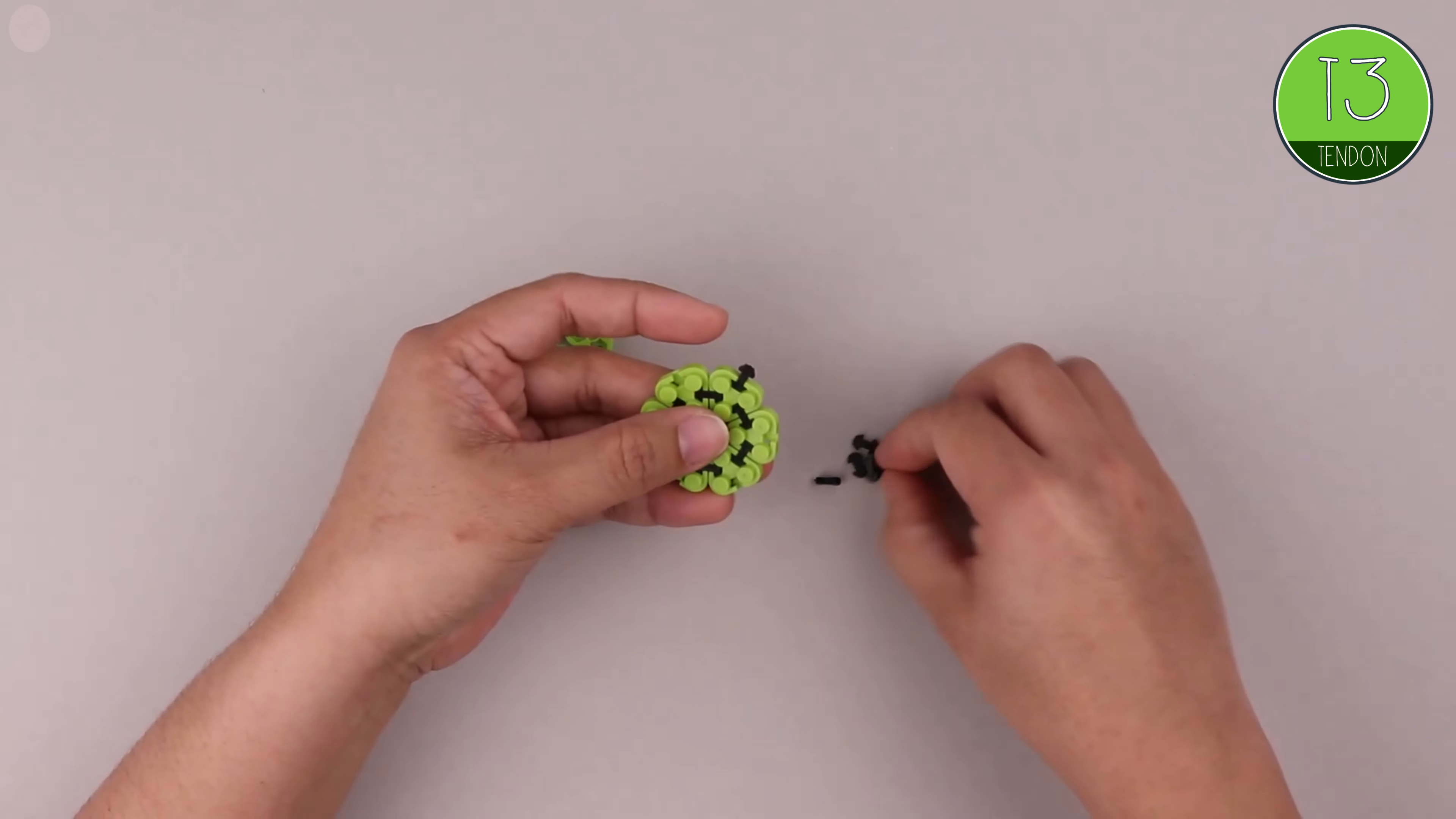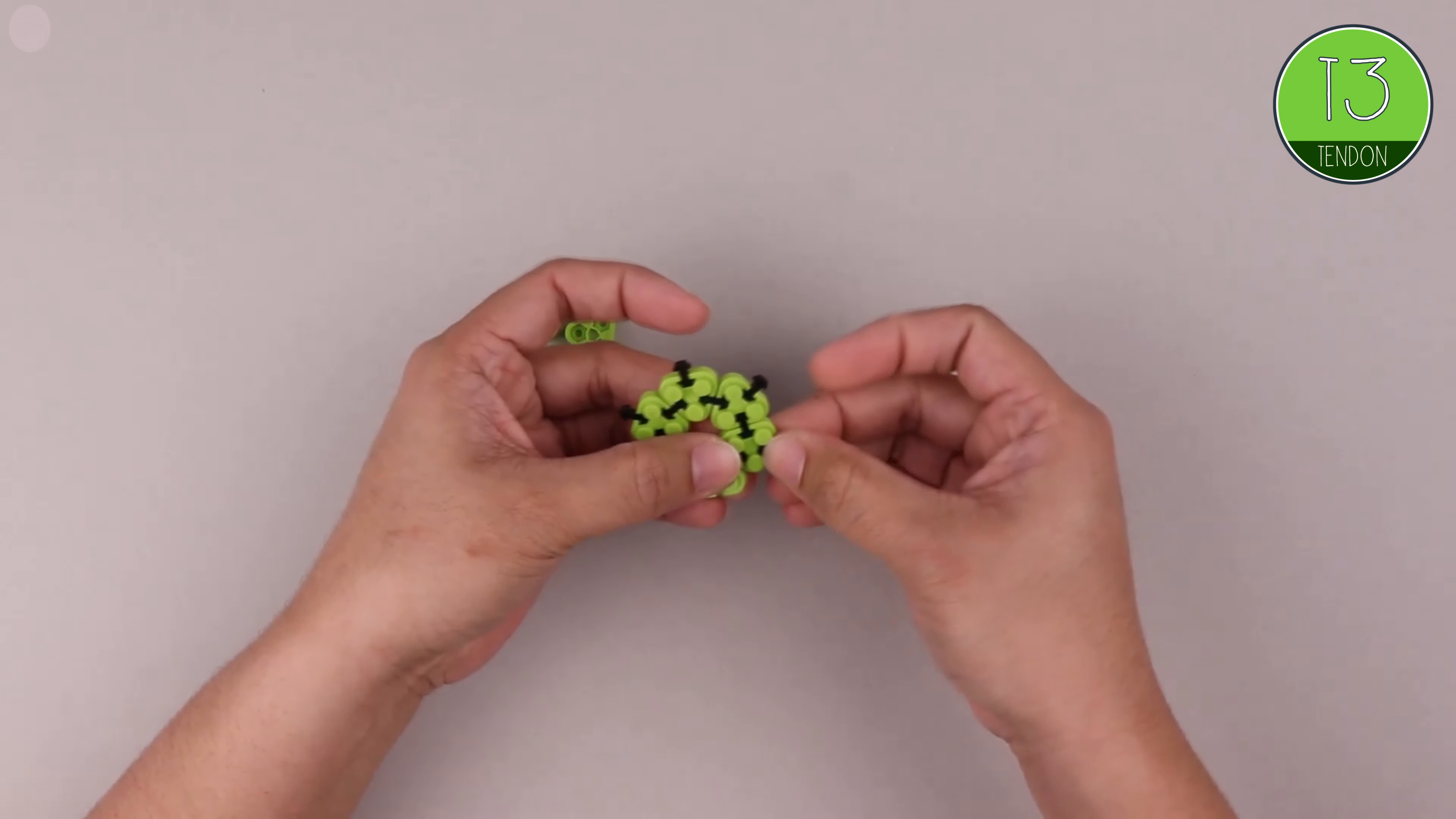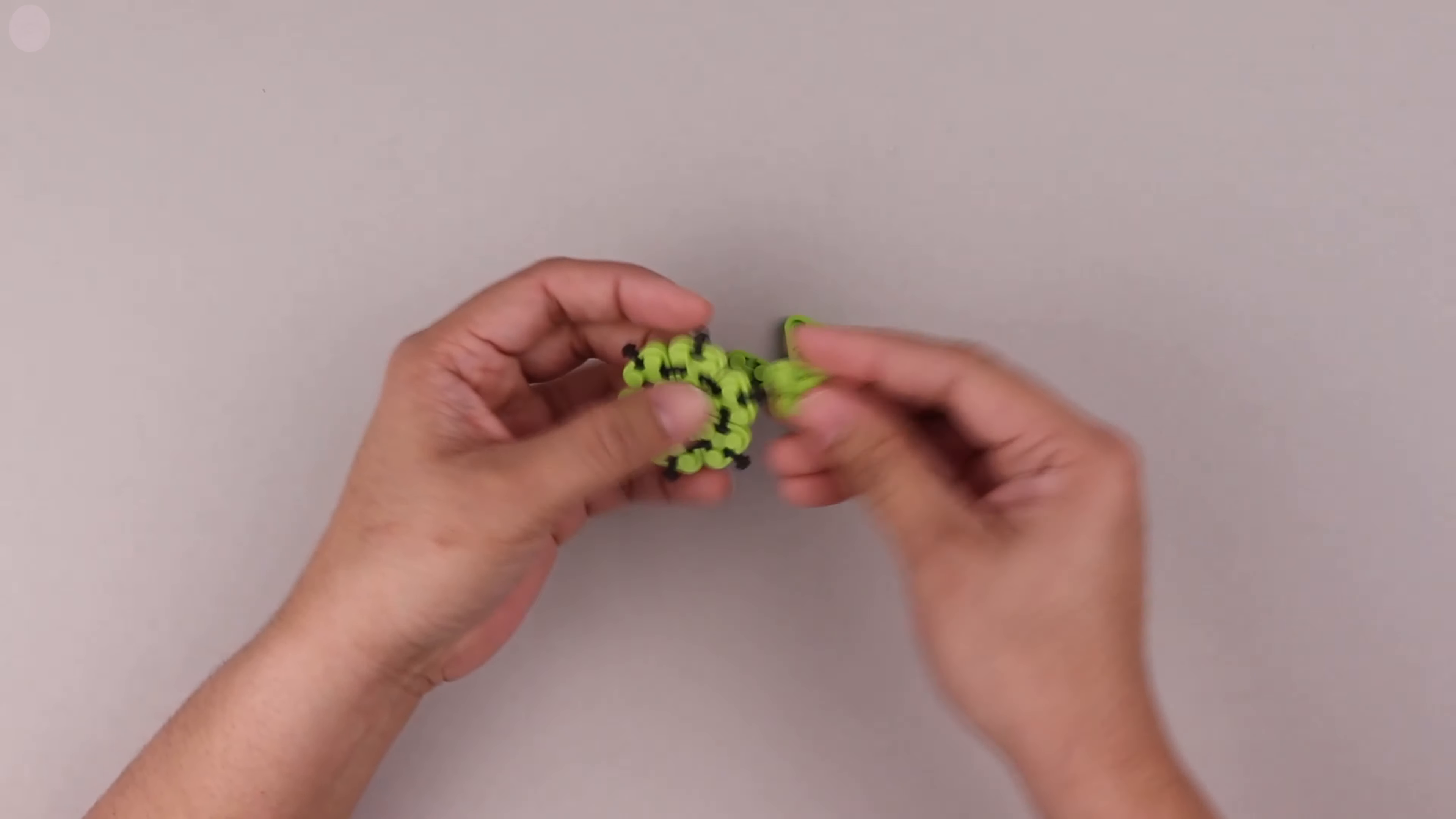There's quite a bit of geometry involved in building the head, so once we've got our circle, we're going to attach T3 tendons to the outside edges and then triangle bricks to them.